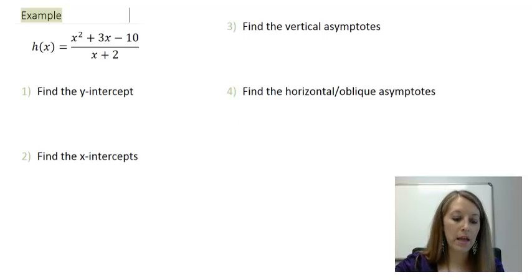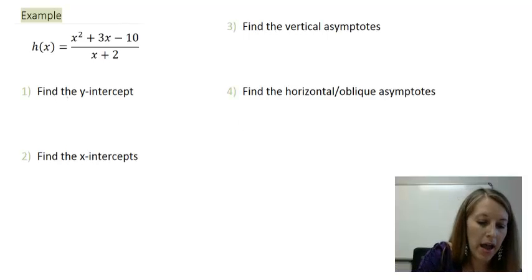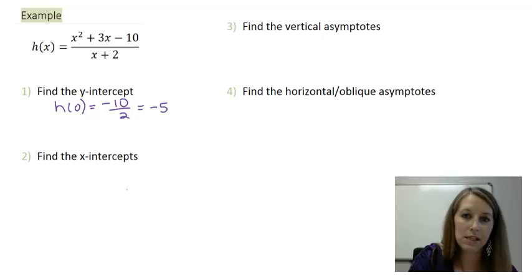To find the y-intercept, we let our x value be 0, or we find h of 0. That gives us the constant of the numerator divided by the constant of the denominator, which simplifies in this example to be negative 5. That gives me 0, negative 5.